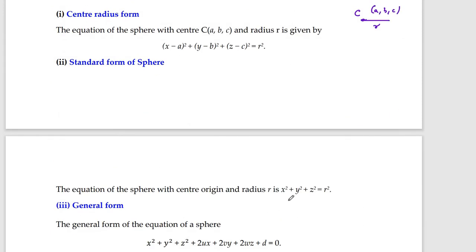When the center of the sphere is at the origin and the radius is r, the equation simplifies to: x² + y² + z² = r².